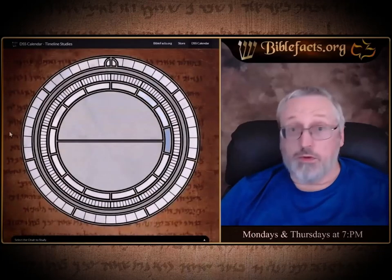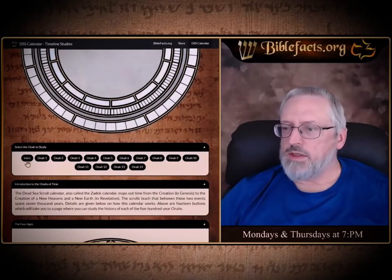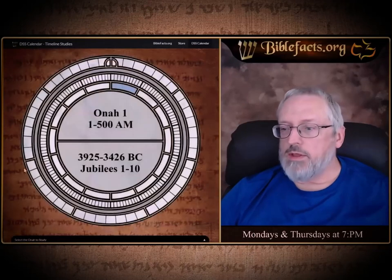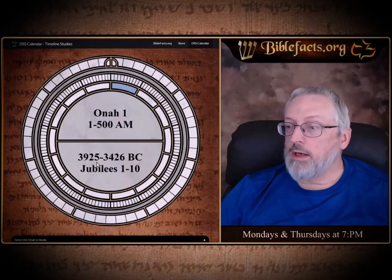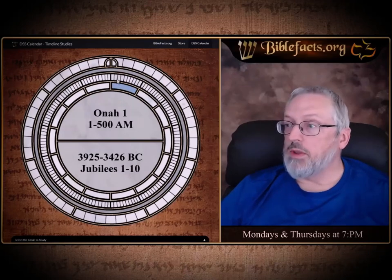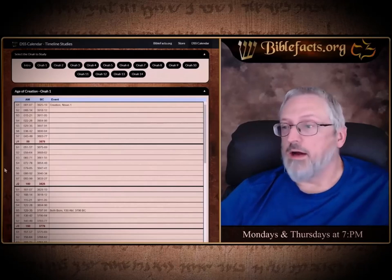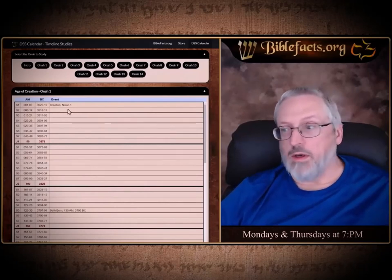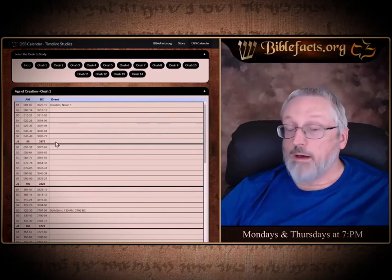This should explain everything and give you the graphics. Now I want to do one more thing before we finish — the Onas to study. These are 500-year periods. If we click on the first Ona, we have the calendar for this 500-year period — these 10 Jubilees — which is Ona 1, years 1 to 500 AM, 3925 to 3426 BC, Jubilees 1 to 10. We have a 500-year chart of historical stuff. Creation was on Nisan 1, the first day of creation, in the first Shemitah of the first Jubilee of the first Ona of the first age.